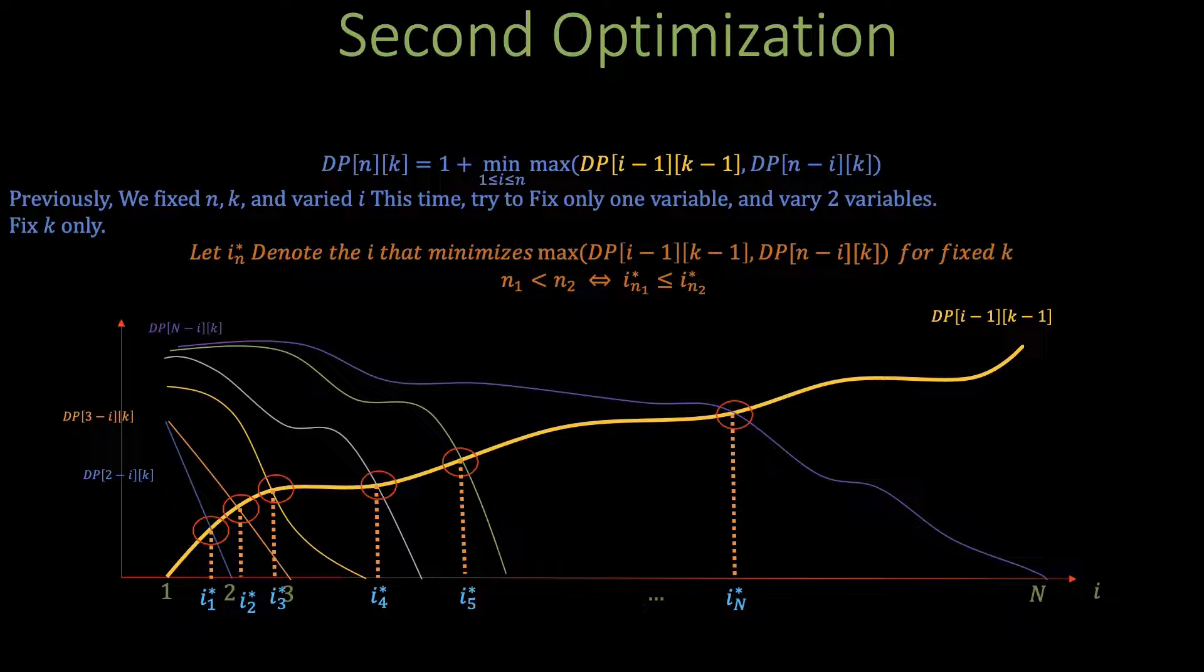Now would be a good time to take a step back and reflect on some of the conclusions we have so far. We showed that if we somehow fix k and consider dp[n-i][k] for all values of n from 2 all the way to capital N there seems to be a relationship between the i that minimizes their recurrence in that the minimizing i denoted as i_n* in this case are monotonically increasing as you increase n. This very simple yet powerful observation will be more than enough to give us an O(KN) time solution for the problem.